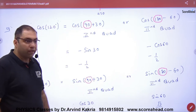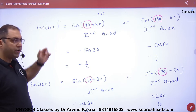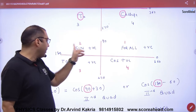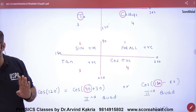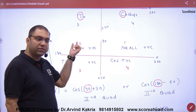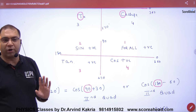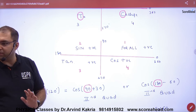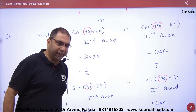Now let's find cos(120). First, decide which quadrant 120 belongs to. Where is 120? Between 90 and 180 — so it is in the second quadrant. In the second quadrant, sin(120) is positive and cos(120) is negative. So the sign of my answer will be negative.